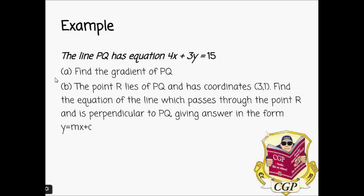And part B asks us the point R lies off PQ and has the coordinates (3,1). Find the equation of the line which passes through point R and is perpendicular to PQ, giving your answer in the form Y equals MX plus C.